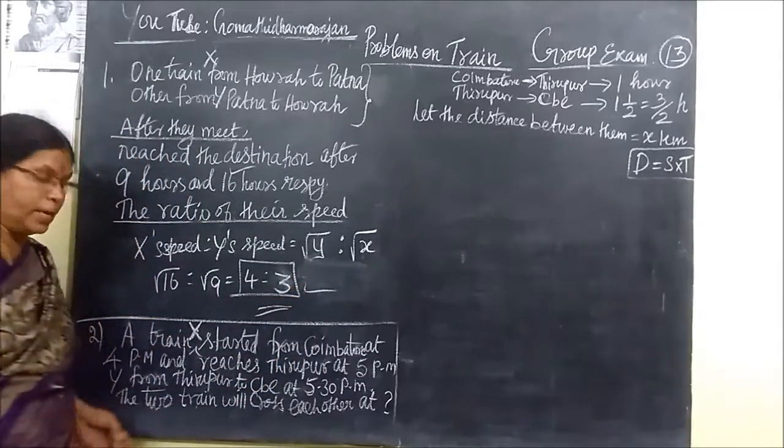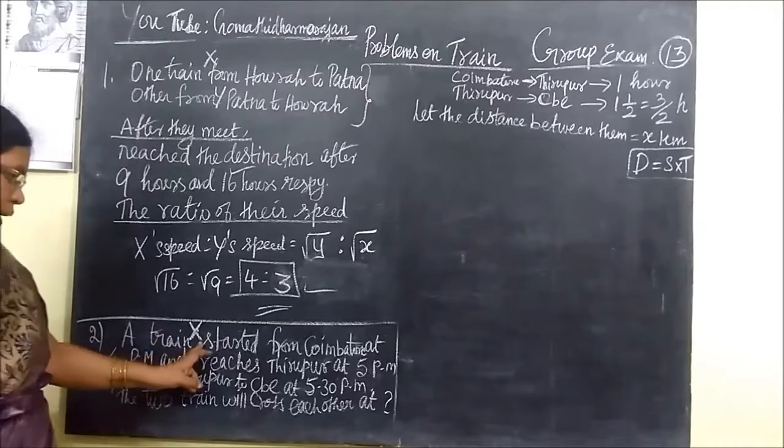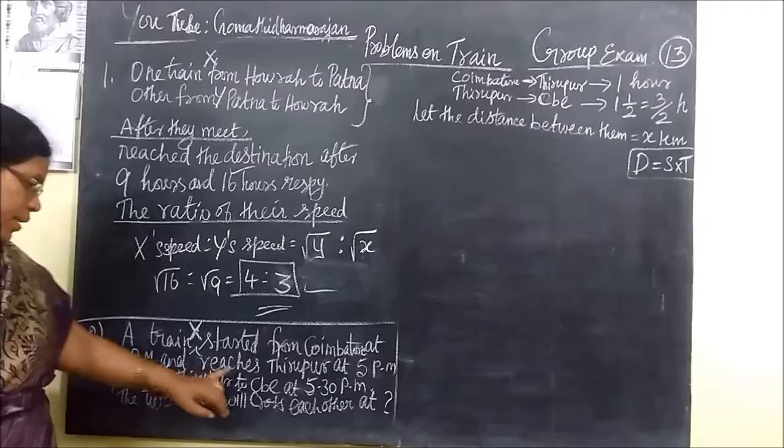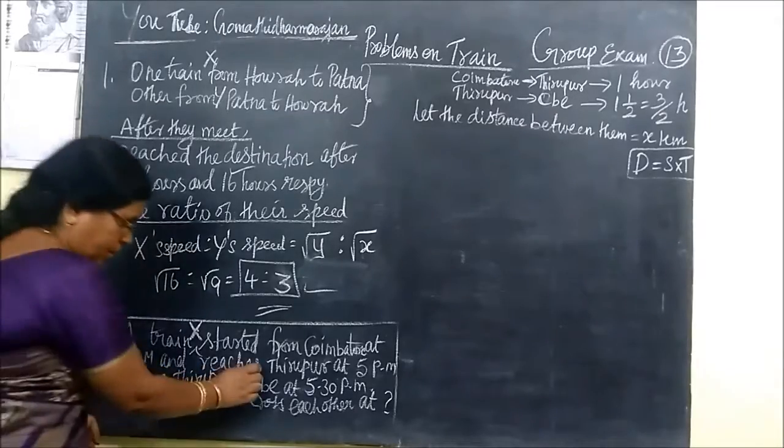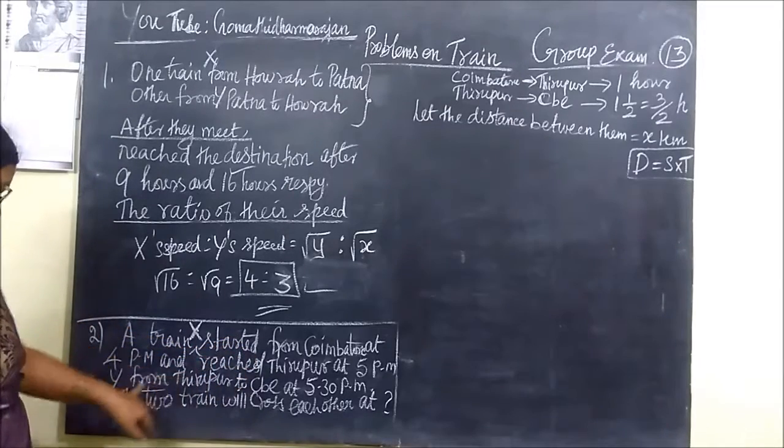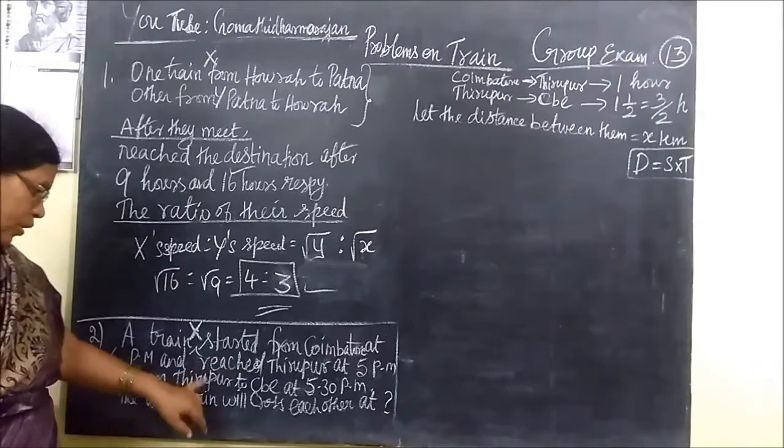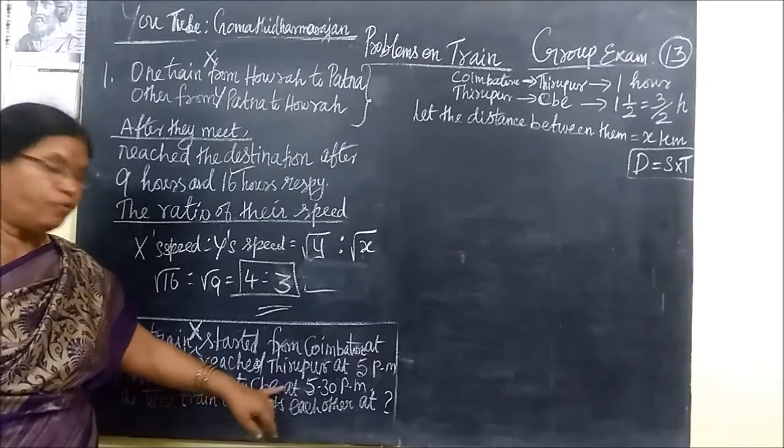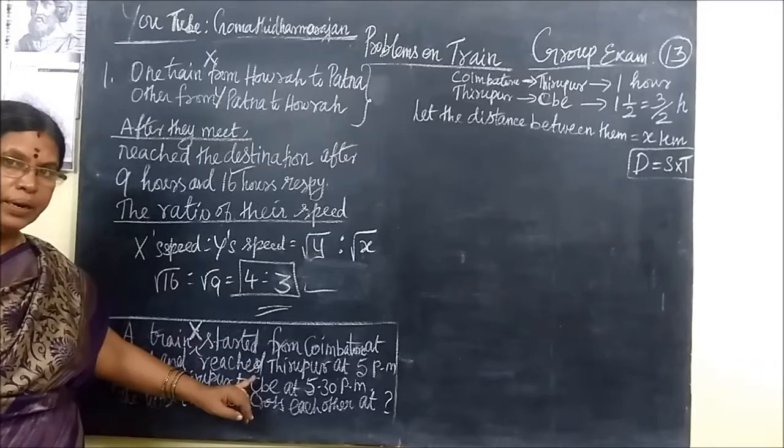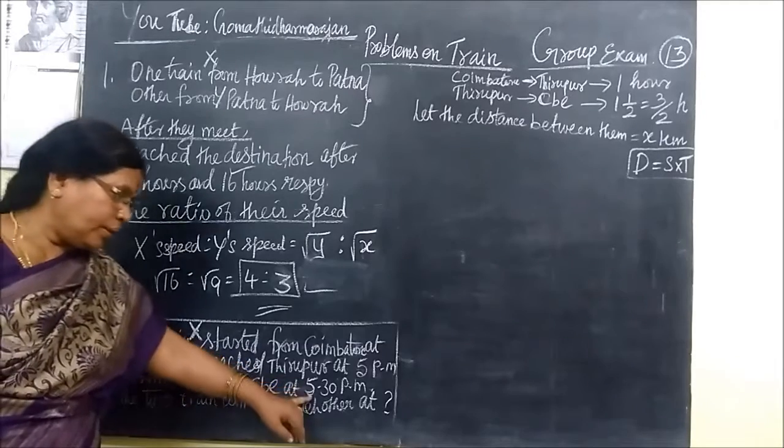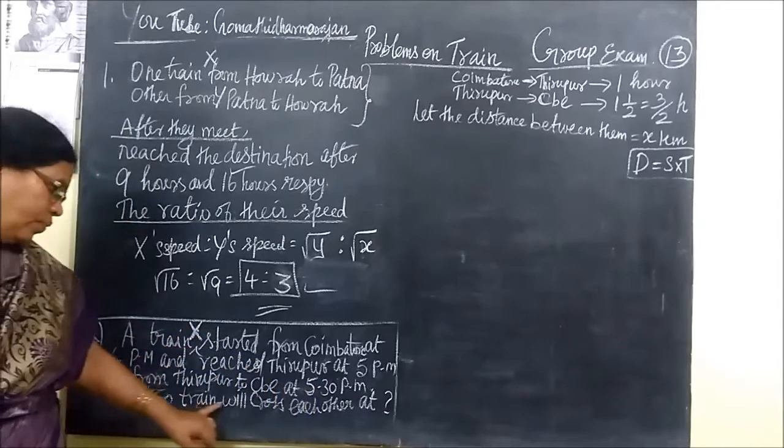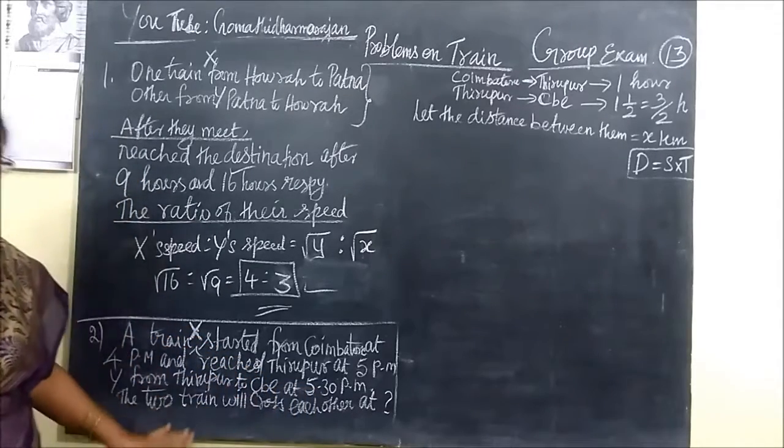Now come to the second question. A train X is started from Goyam tour at 4 pm and reaches Thirupu at 5 pm. Getting up with the 1 hour travelling. And another train Y from Thirupu to Goyam tour at 5.30 pm. Then the 2 train will cross each other at what time?